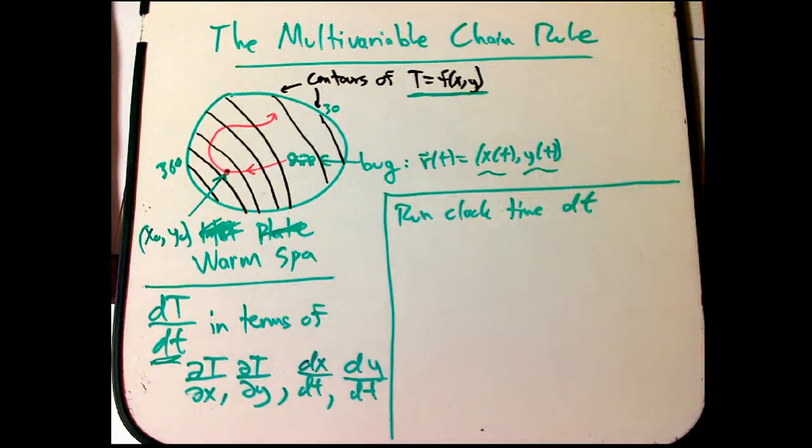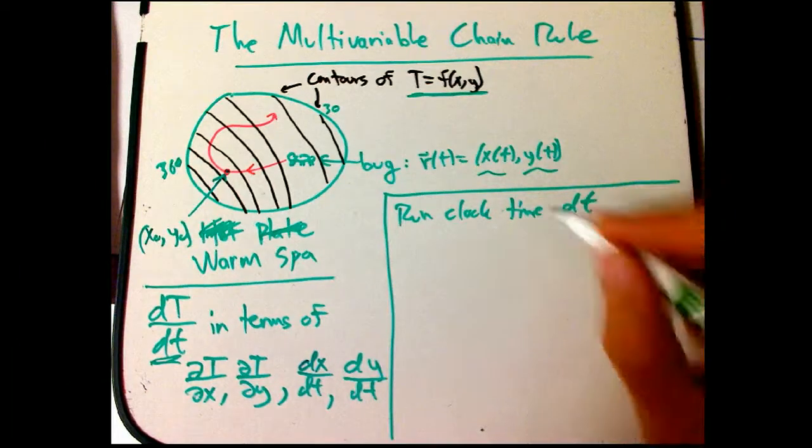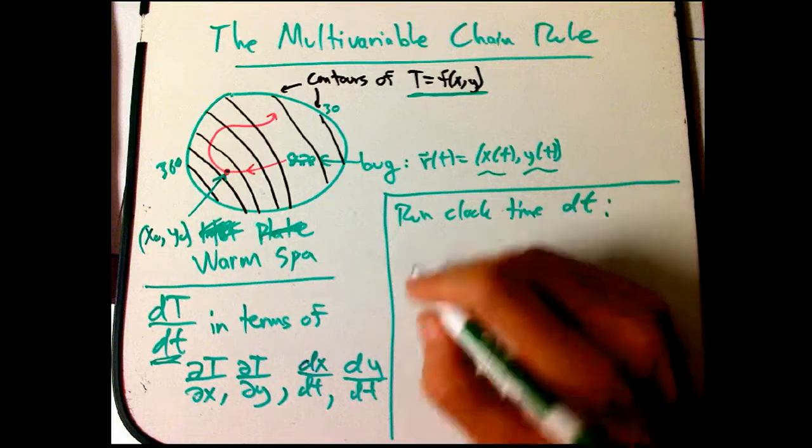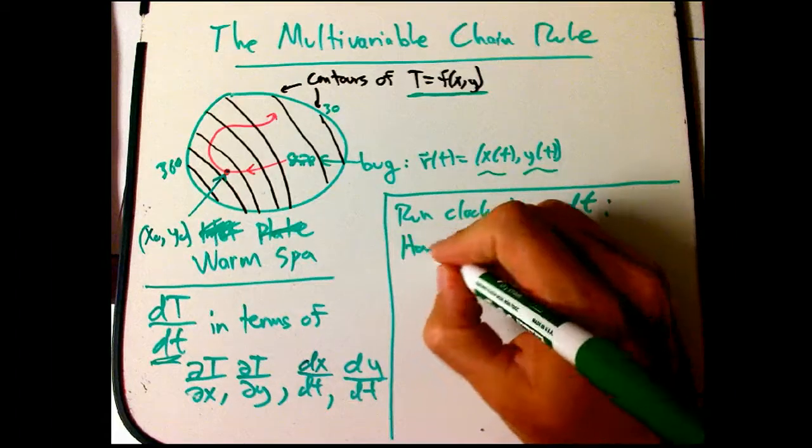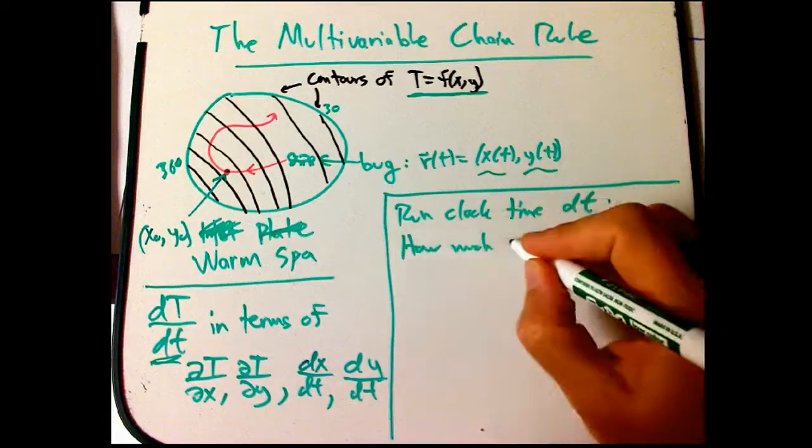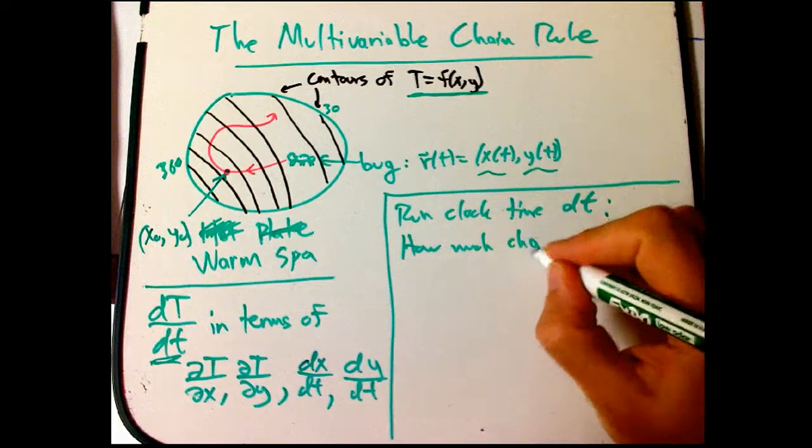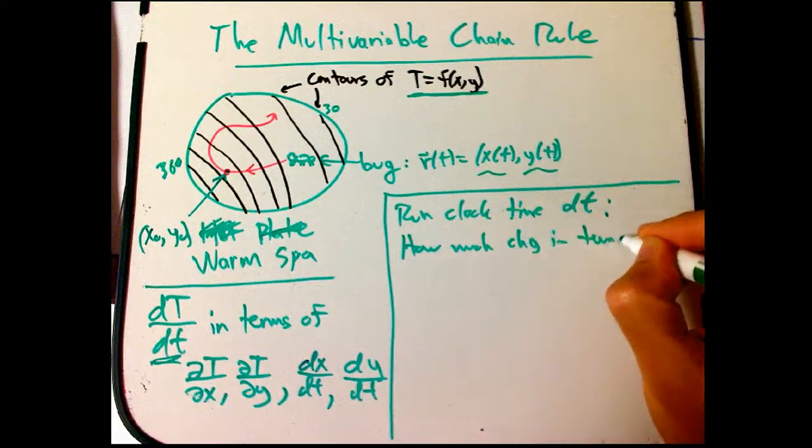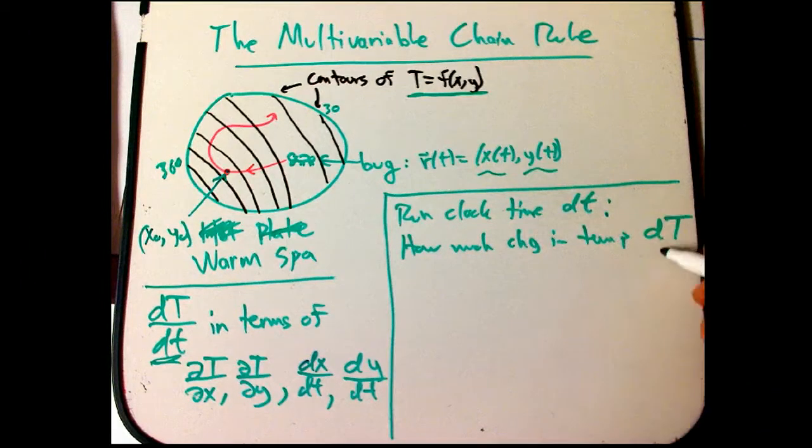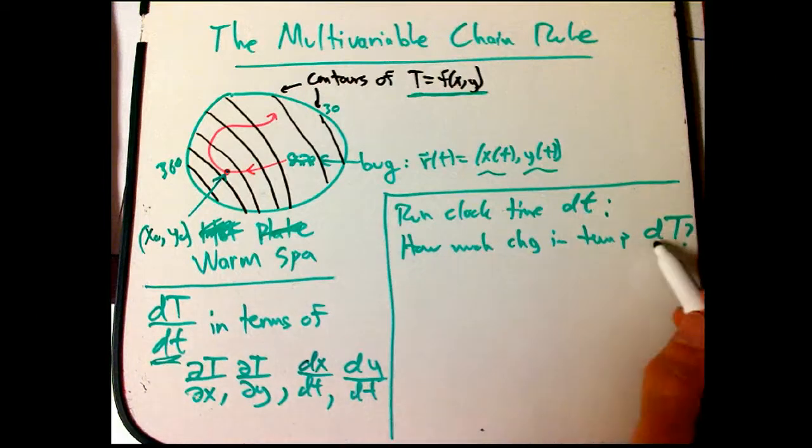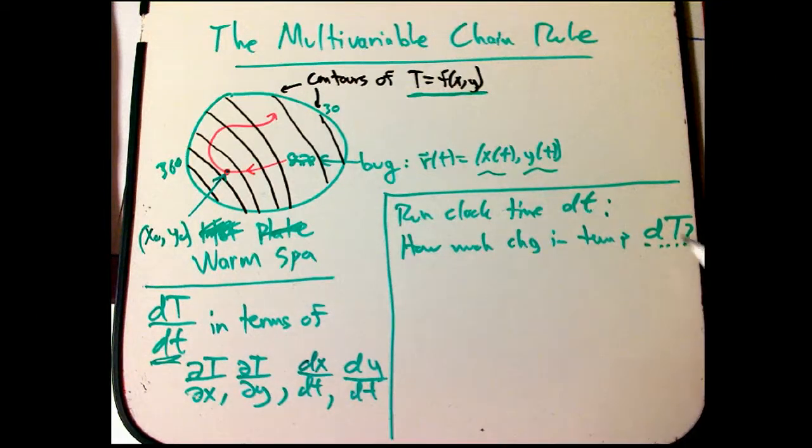So I'm just going to run the clock a very short time dt. Think of that as very, very short. And then I'm going to just ask, how much change in temperature do I get? And that's going to be D big T.